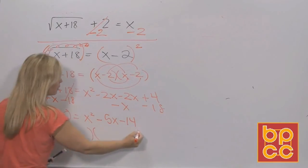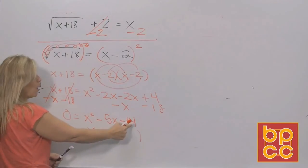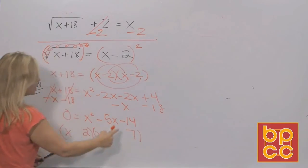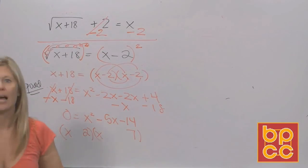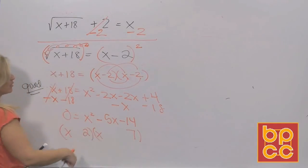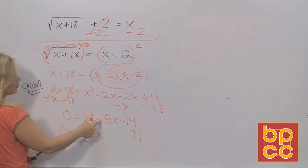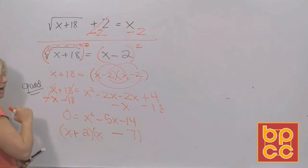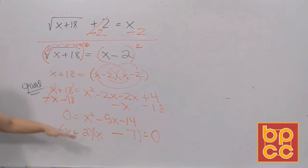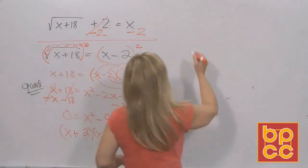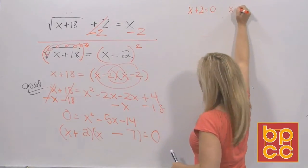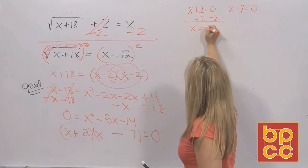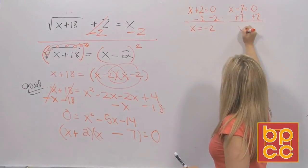Does it factor? Sure — it's a trinomial. Two parentheses: x times x for x squared. What multiplies to 14? 1 and 14, or 2 and 7. I need factors that subtract to 5, so it's the 2 and 7. Subtract means the signs are different — one positive, one negative — and the middle term gets the sign of the larger factor. So 7 becomes negative and 2 becomes positive, giving (x minus 7)(x plus 2) equals zero. Our first solution is x equals negative 2 and our second solution is x equals positive 7.